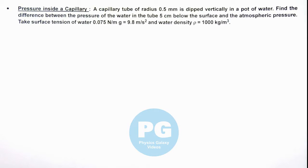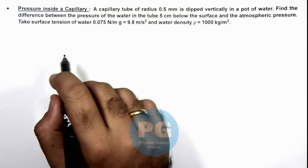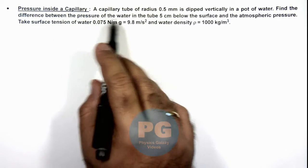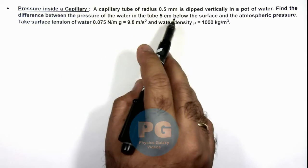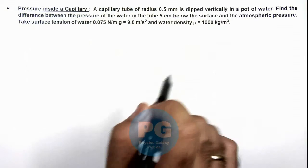In this illustration, we'll analyze the pressure inside a capillary. We are given that a capillary tube of radius 0.5 mm is dipped vertically in a pot of water.